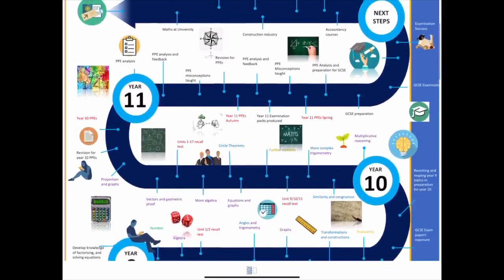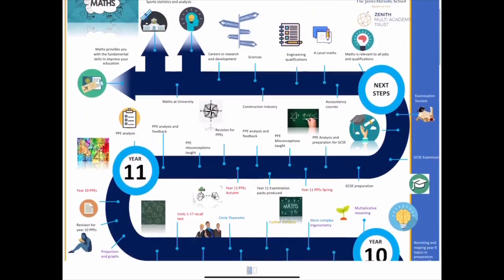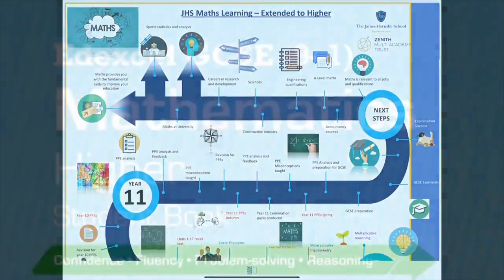From the start of year 9 all the way through to year 11 we then approach the GCSE specification. This allows you to choose whether or not you will end up doing higher or foundation depending on what your ambitions will be within maths.